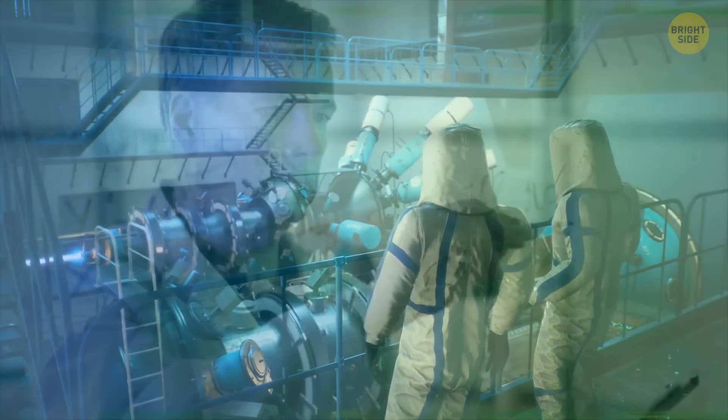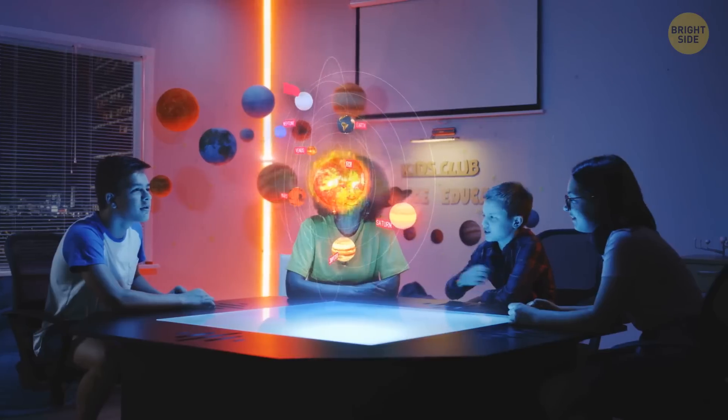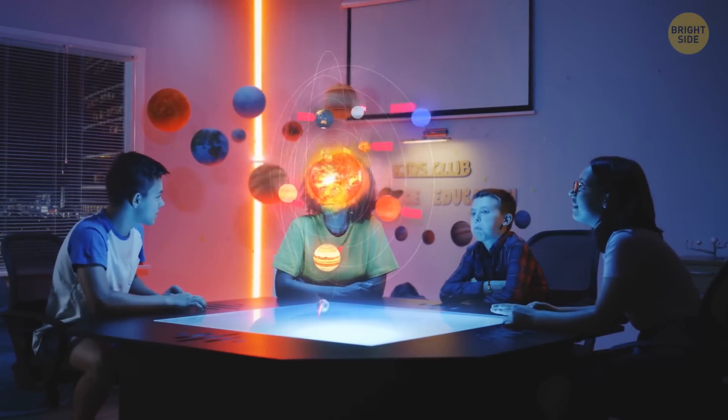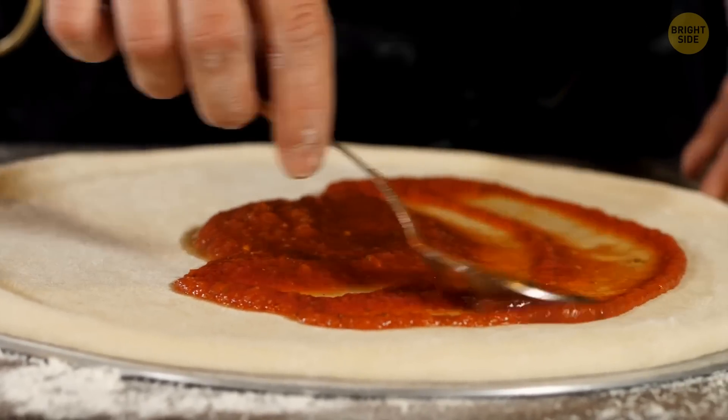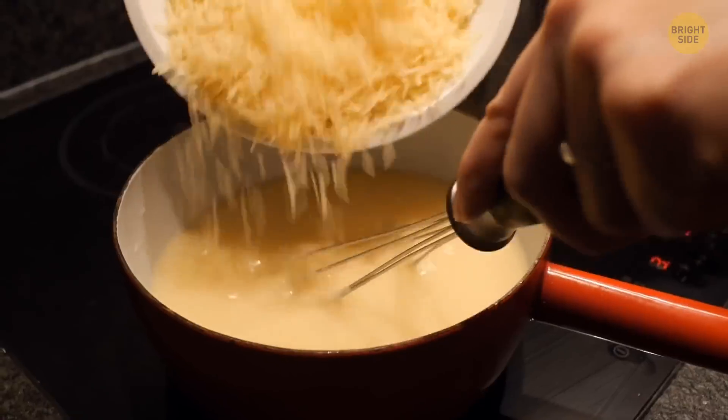But why do we even need to do that? Well, studying the quark-gluon plasma helps us understand how the universe evolved and what happened in its earliest moments. To understand the recipe of the entire pizza, we need to know all ingredients, right? Including the melted cheese.